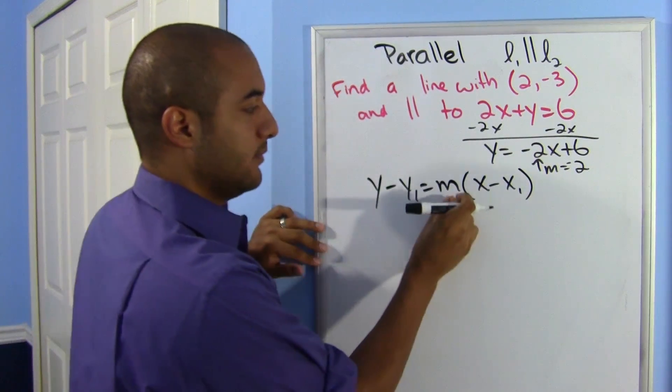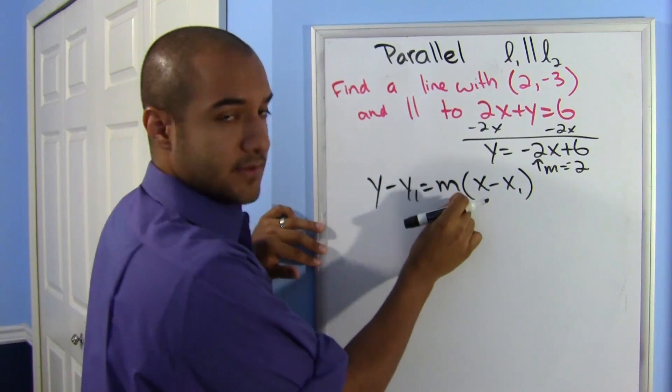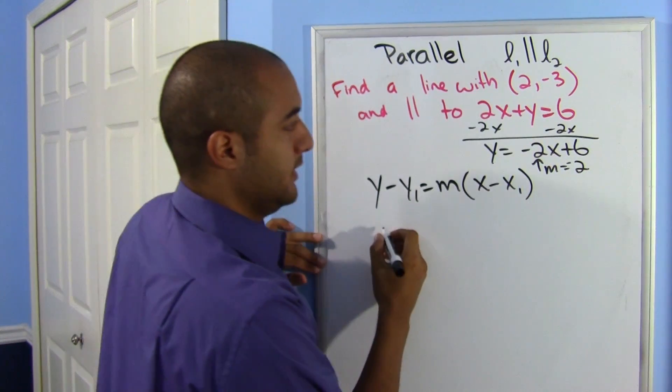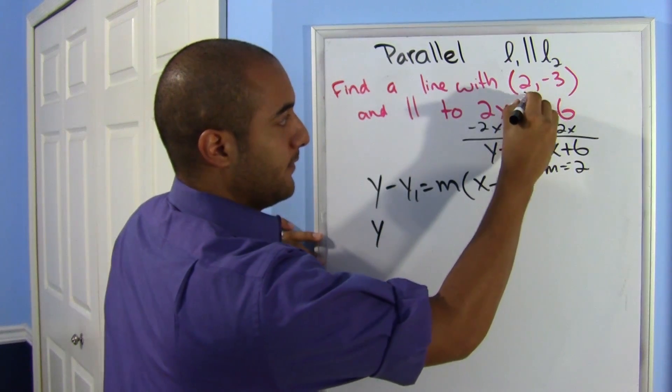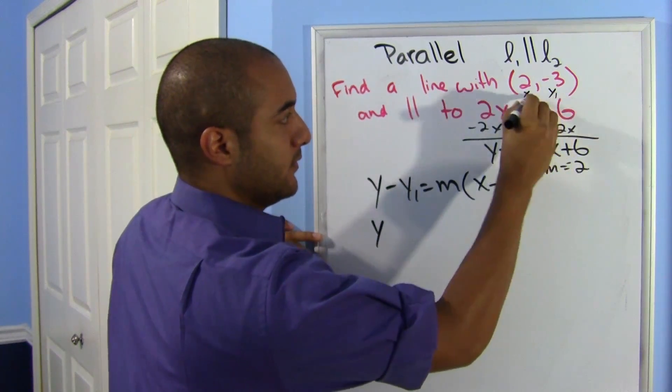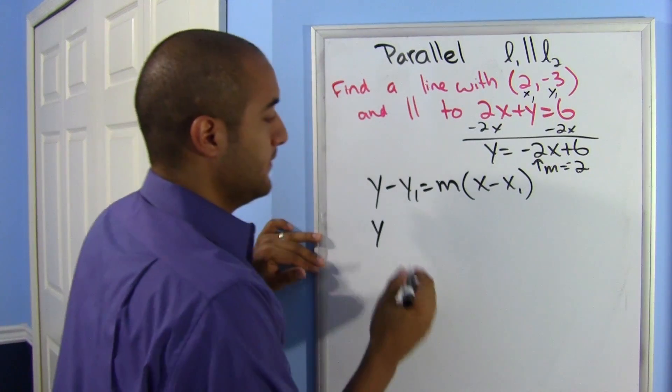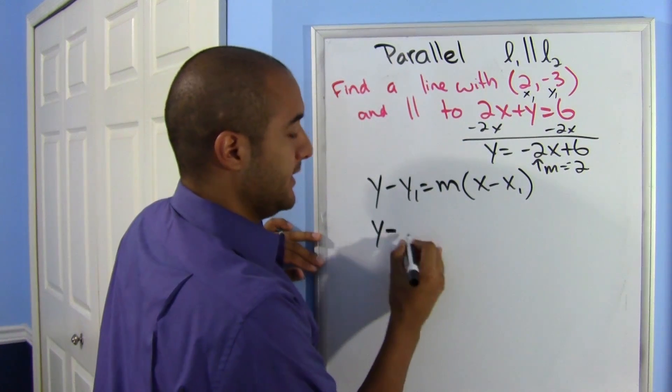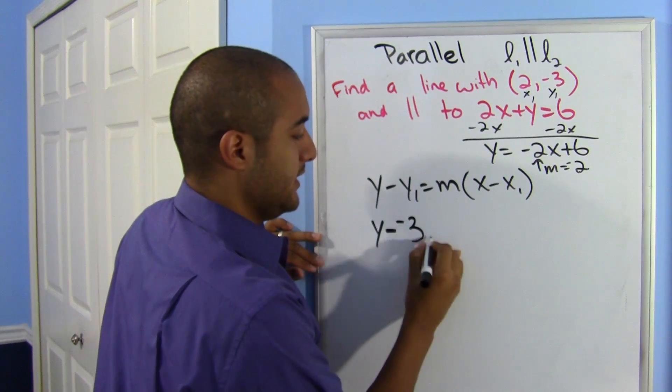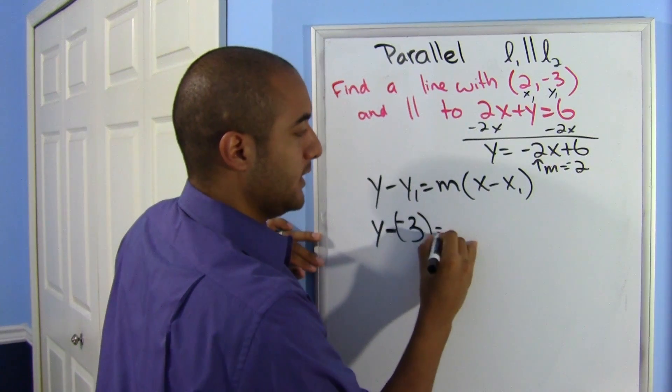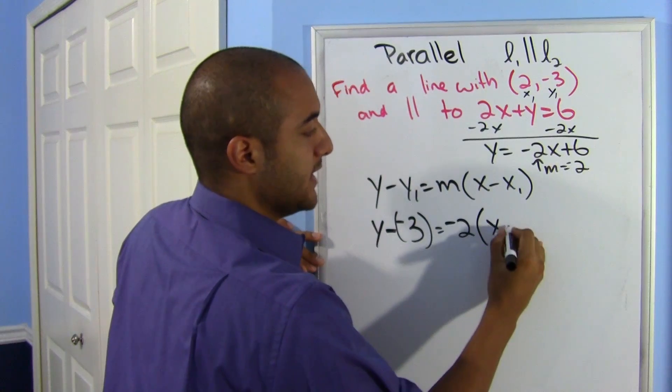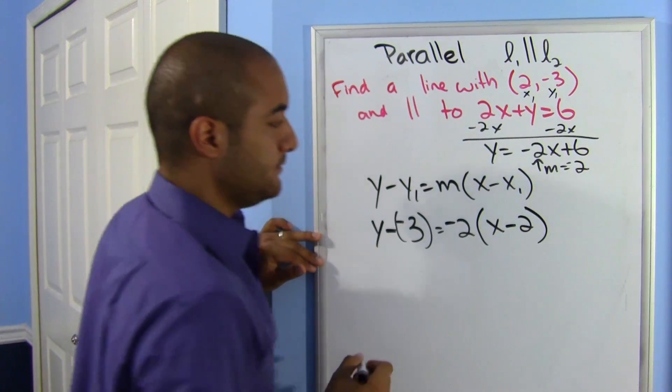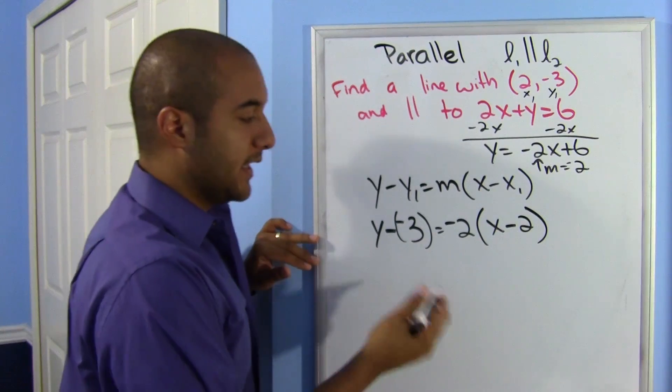I'm going to use y minus y1 equals m times x minus x1. See? Point-slope. So let's go ahead and substitute what we know. We know that that's my x, that's my y1. So we know that it's y minus negative 3 equals my slope that I worked out times x minus x1.